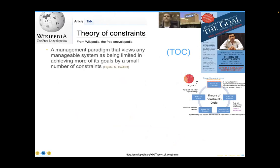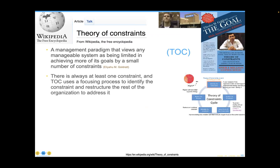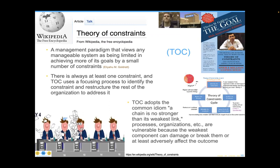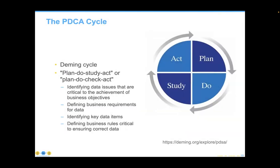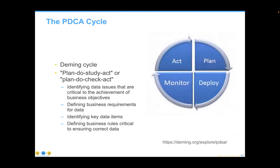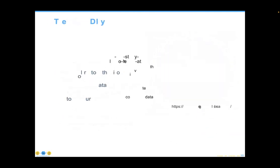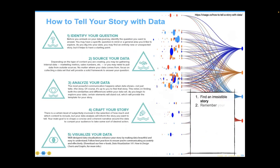I've basically followed the theory of constraints, which holds that in any system there is going to be something blocking it — clogging the veins — making the entire system no stronger than the weakest link in the chain. We need to find, fix, and move on to the next one. If that sounds simplistic, it is beautifully simplistic from W. Edwards Deming. He uses plan, do, check, act — PDCA — just seems to roll off the tongue easier. Everybody understands that's what we're talking about.